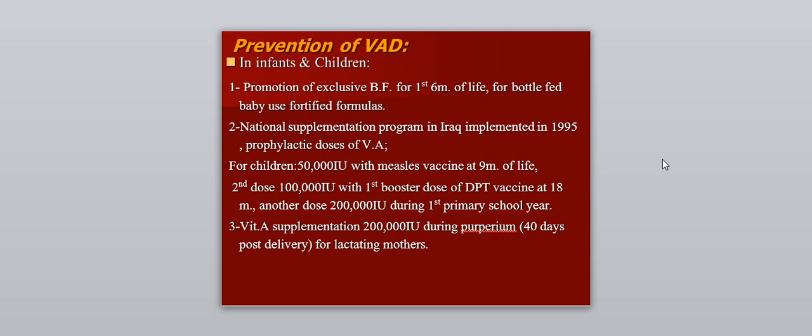Prevention of vitamin A deficiency in infants and children includes promotion of exclusive breastfeeding for the first six months of life, and when on bottle feeding, using baby formula. The national supplementation program in Iraq implemented in 1995 provides prophylactic doses: 50,000 international units with the measles vaccine at nine months; 100,000 international units with the first booster dose of DPT at 18 months; and 200,000 international units at the first primary school year.